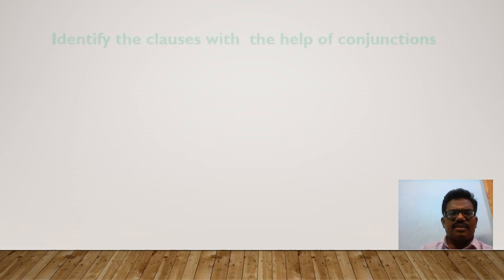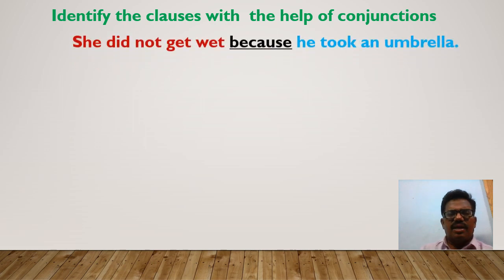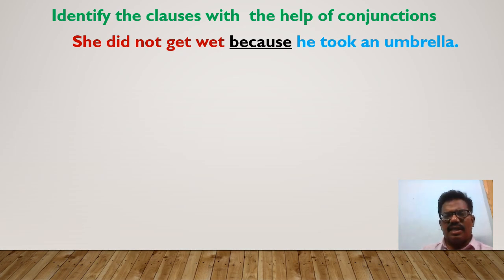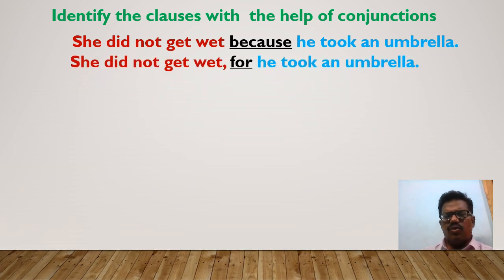Now let us attempt an exercise — identify the clauses with the help of conjunctions. In the first sentence, the clause 'he took an umbrella' is called a subordinate clause because it has the subordinating conjunction 'because' before it. In the next sentence, the same clause 'he took an umbrella' is called a main clause because it has the coordinating conjunction 'for' before it.